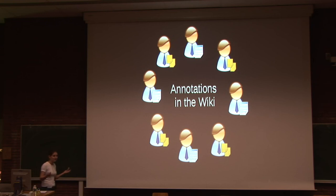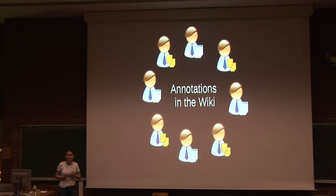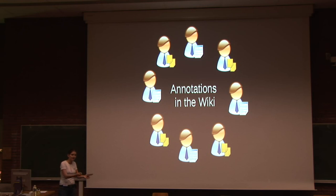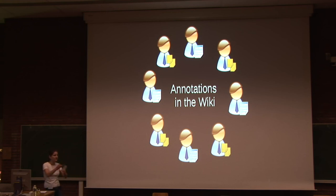Obviously, the solution is to do this in a wiki. You have authors that collaborate in the wiki to create the paper, you have reviewers that do the annotations on top of that paper in that wiki, and everything is integrated in the same system, so you can always see the latest version, latest modifications, latest reviews, and so on.